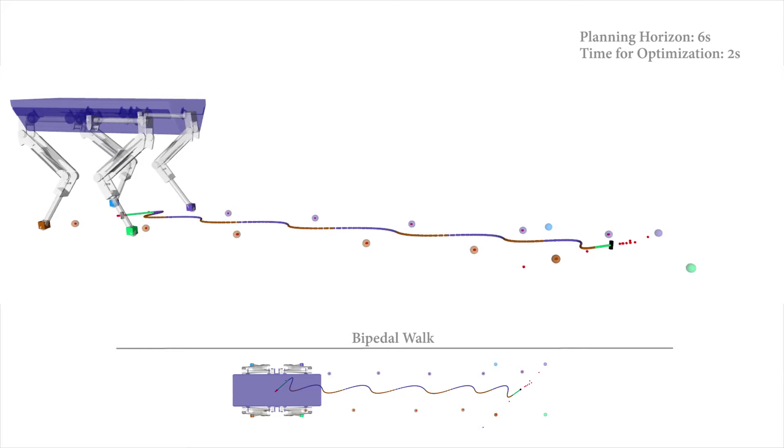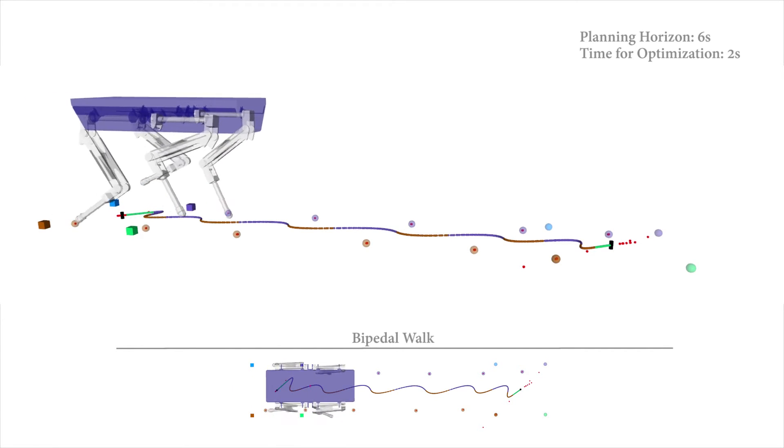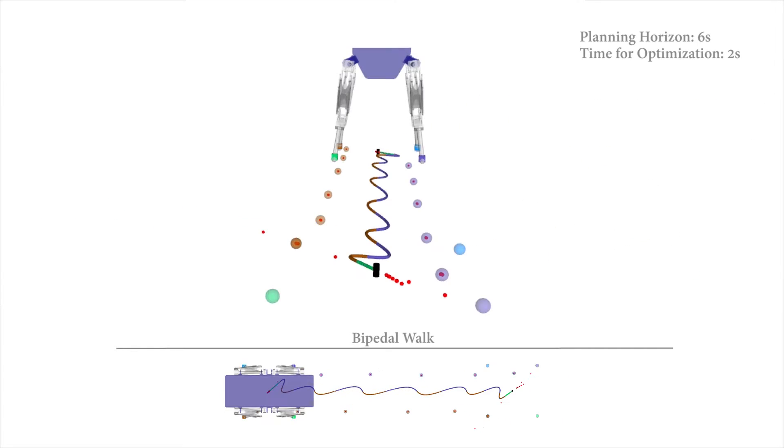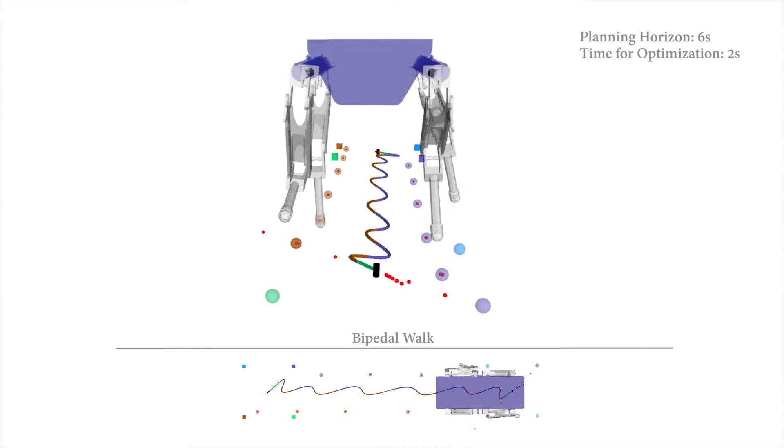Biped point-foot walking shows the extreme case, in which no support areas exist and the red center of pressure must always lie exactly inside the current foothold. This clearly shows the advantage of vertex-based constraints, since point feet cannot be represented by traditional hyperplanes.